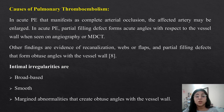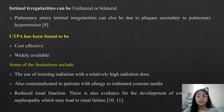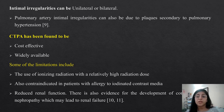What are the basic causes of pulmonary embolism? In acute PE that manifests as complete arterial occlusion, the affected artery may be enlarged. In acute PE, a partial filling defect forms acute angles with respect to the vessel wall when seen on angiography or MDCT. Other findings include evidence of re-canalization, webs or flaps, and partial filling defects that form obtuse angles with the vessel wall. Intimal irregularities are broad-based and smooth with obtuse angles with the vessel walls, and can be unilateral or bilateral. Pulmonary artery intimal irregularities can also be due to plaques secondary to pulmonary hypertension.